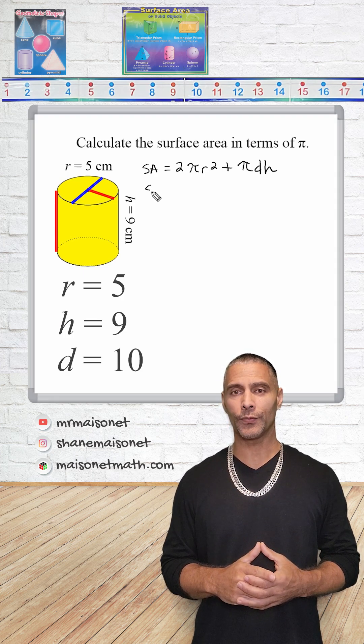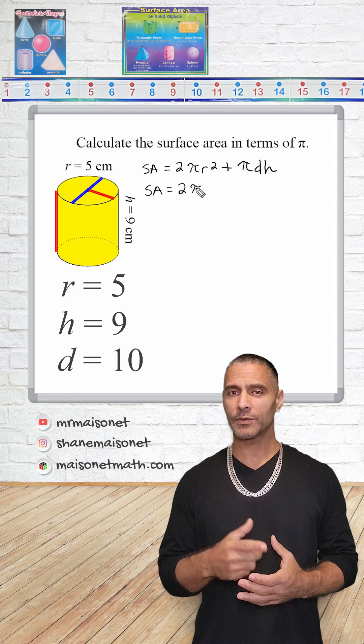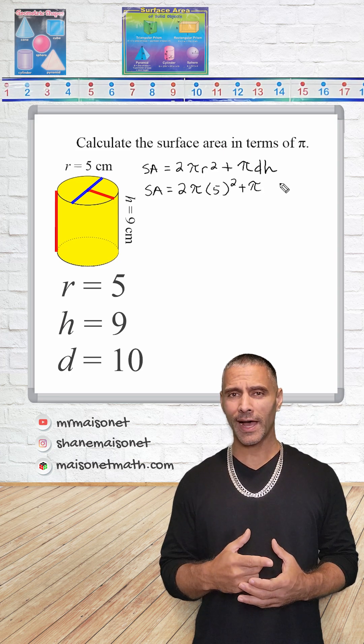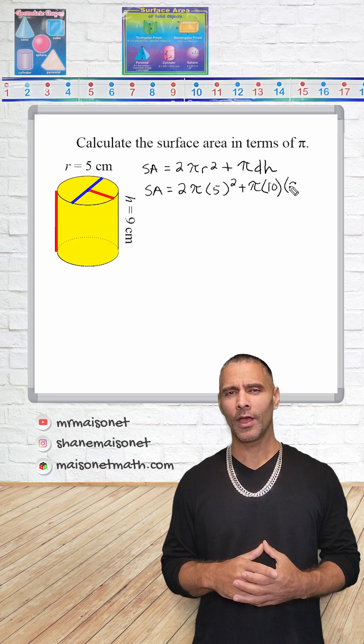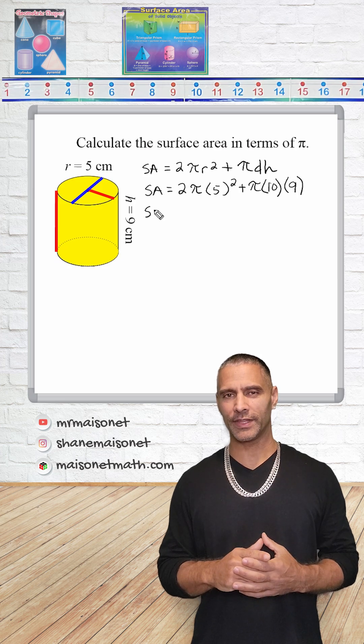Substituting these values into the formula gives us 2 times pi times 5 squared plus pi times 10 times 9. All right, now let's simplify each part of the equation.